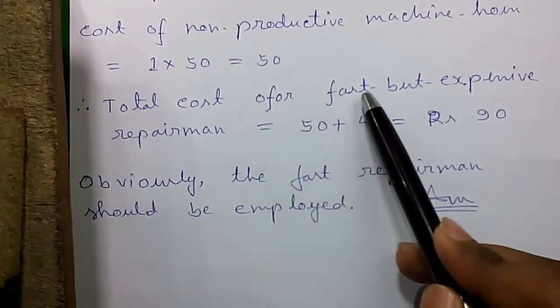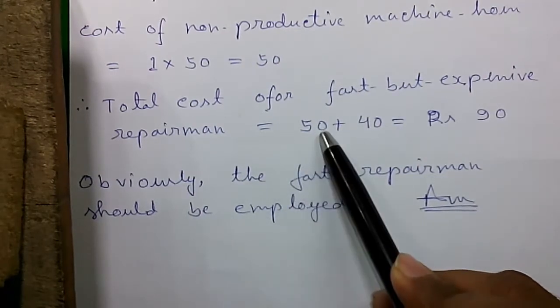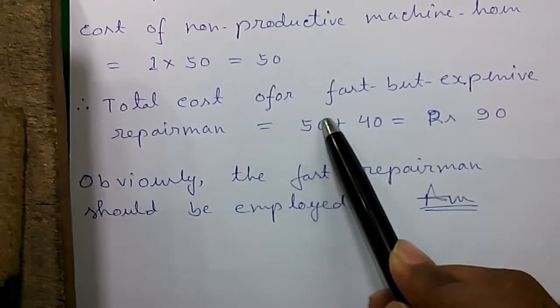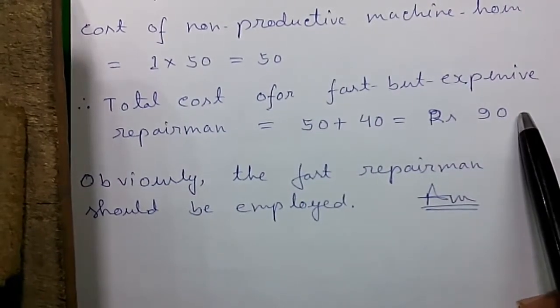So the total cost for fast but expensive repairmen equals to his wage 40 plus non-productive machine hours cost that is 50. So total is rupees 90.